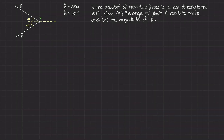Welcome to this example. We have this particle P, and this particle P is subjected to two forces, force A and force B. The magnitudes of both of these forces are given: A is 35 newtons and B is 50 newtons.